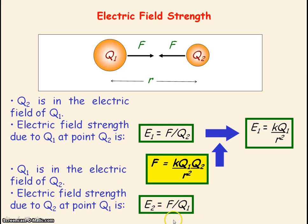The force acting on Q1 is again given by Coulomb's law. If we substitute F into this equation for electric field strength, we see that the electric field strength due to Q2 equals kQ2 divided by r squared.